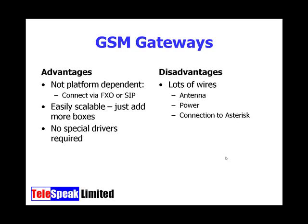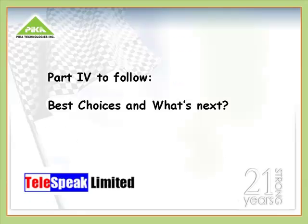The disadvantage of GSM gateways is that we'll have a lot of wires running around — the antenna cable, the power cable, and whatever connection we're making to Asterisk or our IP PBX.